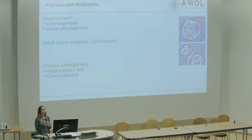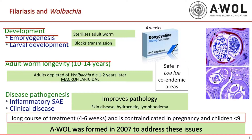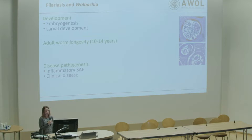A bit about Wolbachia and why we're so interested in it. Basically, we know from many studies that Wolbachia are endosymbiotic bacteria found within filarial worms — here in a cross-section of a female Onchocerca you can see red-stained bacteria in the hypodermal cords — and also found within the developing embryos. We know that they are needed for embryogenesis and larval development.